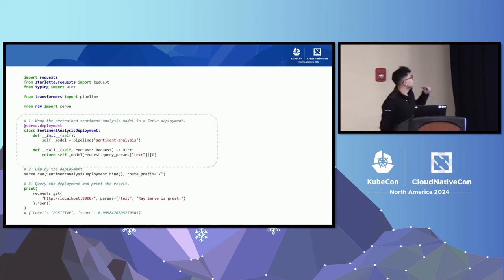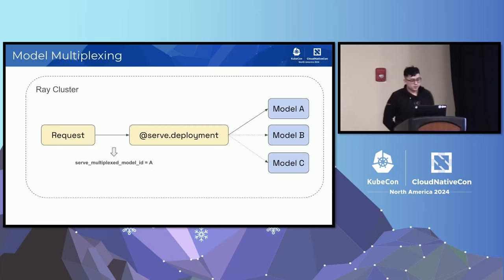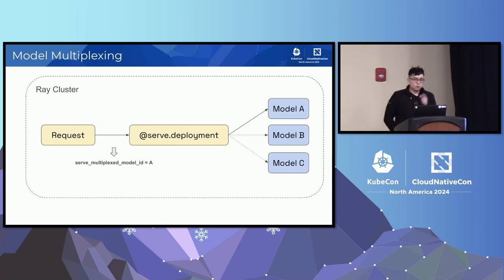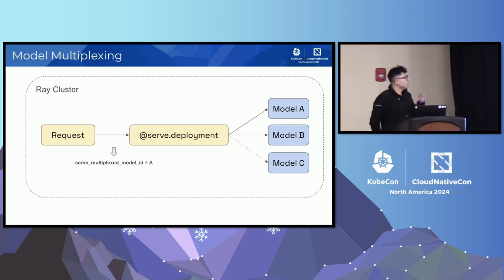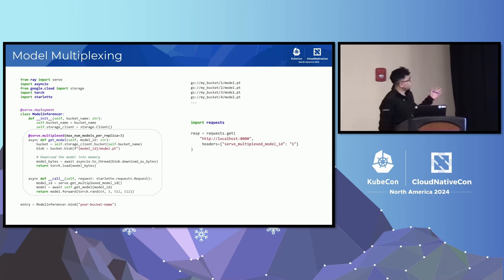In this example, we have a sentiment analysis model that takes some text — 'RayServe is great!' — and returns a label of 'positive' with a score of 99. RayServe also makes it easy to scale out to multi-model deployments through model multiplexing, where you deploy multiple models together and multiplex traffic to different models based on the request. One use case could be running models of varying sizes and routing based on question complexity, or experimenting with outputs of different models. You just add a Python decorator to handle the multiplexing logic.